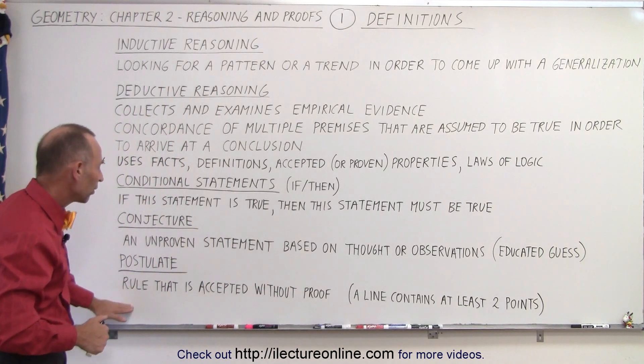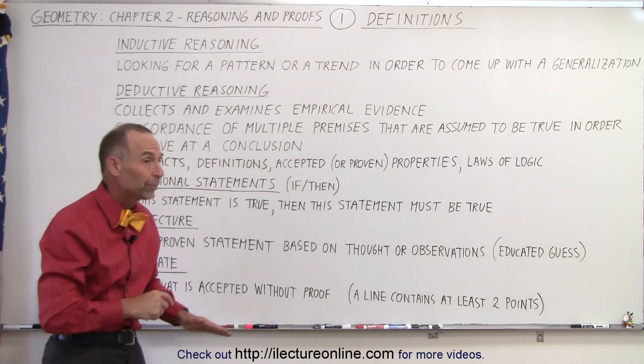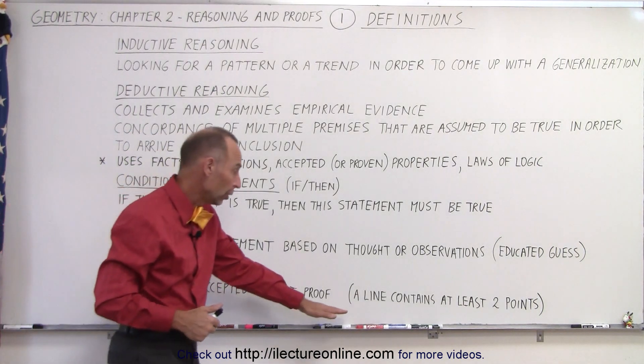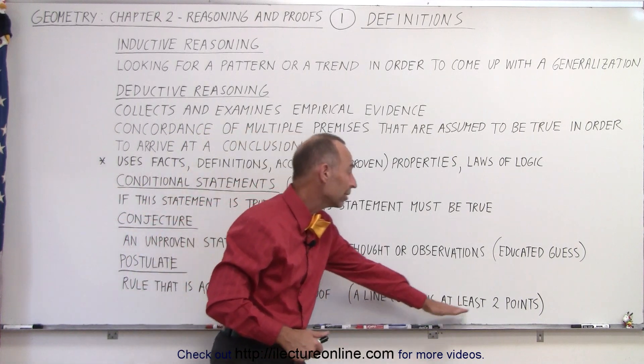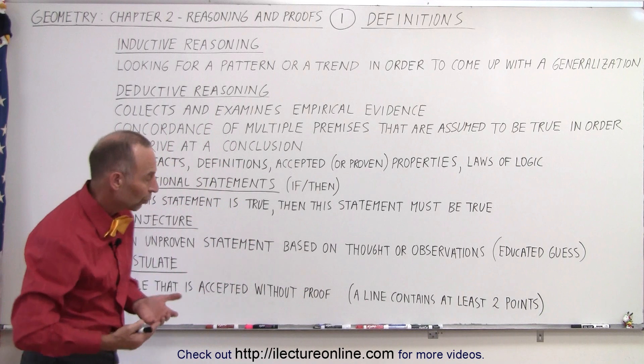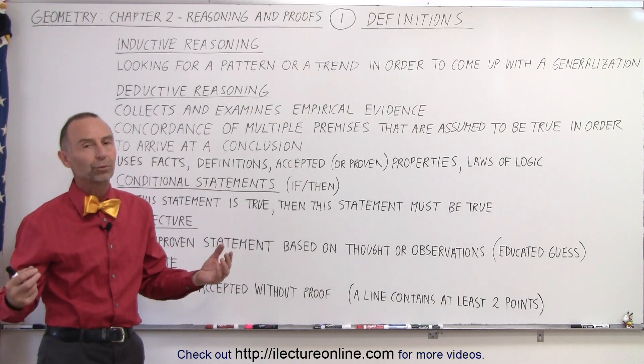Postulates are rules that are accepted without proof. Now, just because they're not proven doesn't mean that they're not necessarily true. For example, we can say that a line contains at least two points. That is a statement that we can accept. That is what we call a postulate. We accept that without proof.